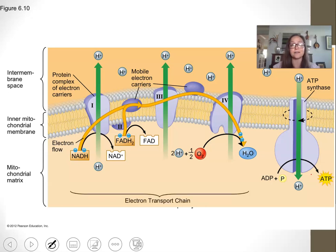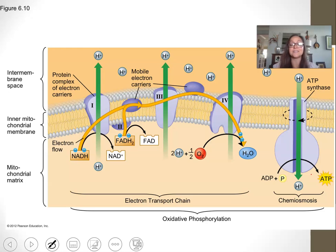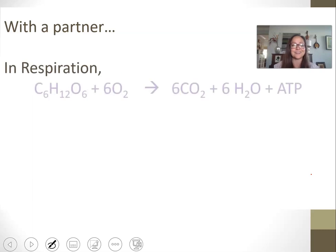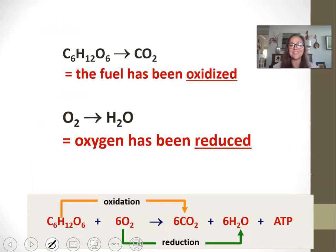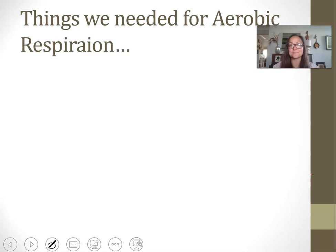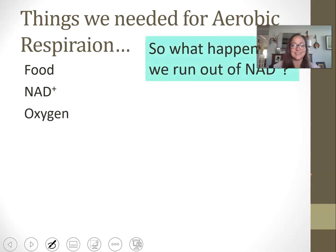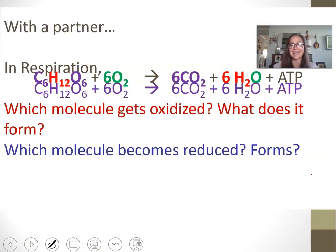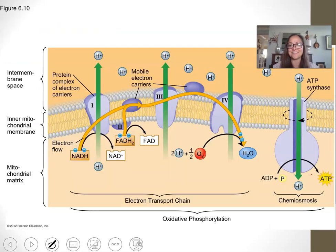When we look at this last step of aerobic respiration, it's made of both the electron transport chain as well as chemiosmosis, and together those are called oxidative phosphorylation. It produces the majority of the ATP that we use. That is it on aerobic respiration. My next video will be on fermentation and anaerobic respiration. Good job, guys.